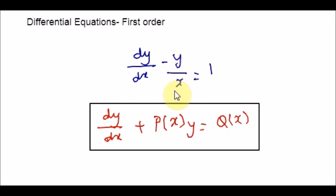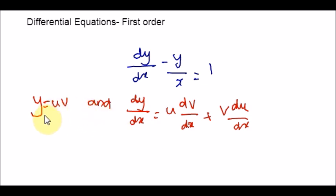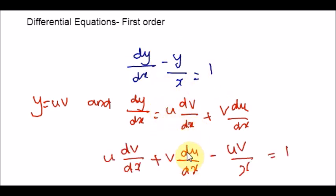So p(x) is negative 1 over x. On the right-hand side, in place of q(x), you just have the constant 1. Now let's follow the steps. Step 1: substitute y equals uv and the product rule formula for dy into the equation. This is just substitution — no other calculation is involved in this step.